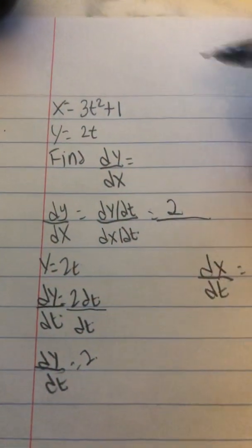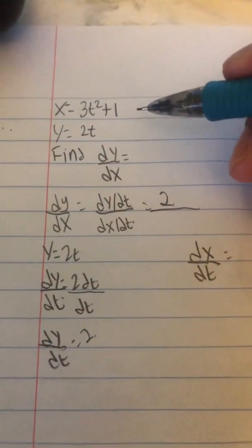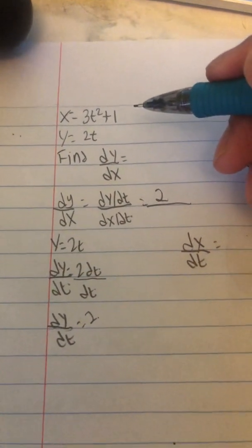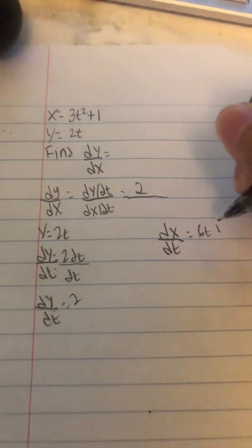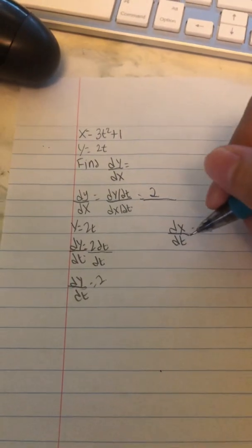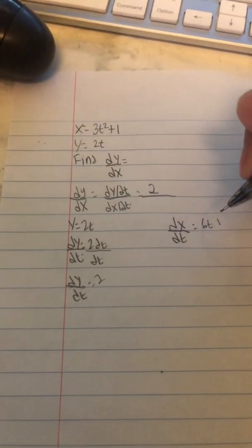Now, dx dt is the derivative of x with respect to t, so it's going to be 6t. So 6t, and we don't have to put dt because we're already divided by dt. So it's just going to be 6t.